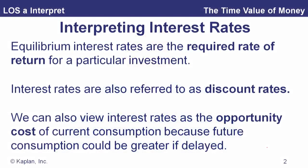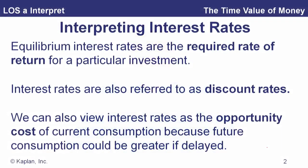When we talk about an equilibrium interest rate, we can talk about it as a required rate of return. Given the risk of the investment, there's a particular rate of return adjusted for that risk that investors require to hold that asset. We also refer to interest rates as discount rates because we can use them to get today's value of money to be received in the future. We use discount rates anytime we need to get the present value — the value today of cash flows to be paid in the future.